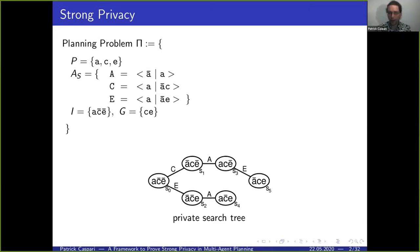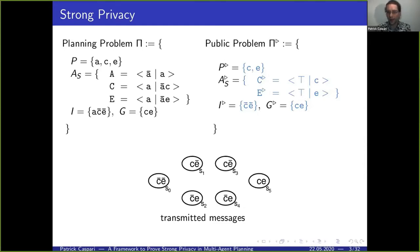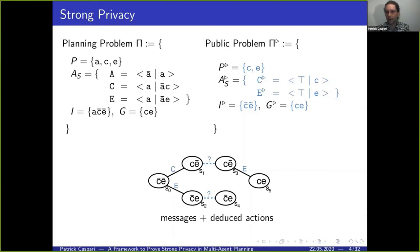If we say that variable a is private, we get a public problem which is basically the same but we disregard the private property a. Now if we use some planning algorithm to solve this problem and transmit a certain set of messages to the other agents, the observing agent can look at these messages and directly see something's not right — because between states s1 and s3, or s2 and s4, there's no action in the public action set that explains why these messages were sent.